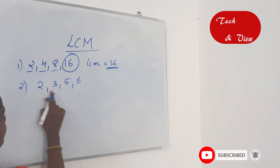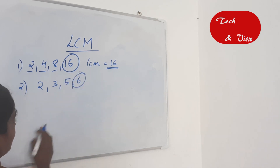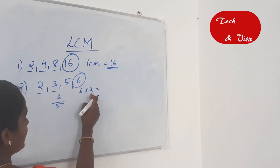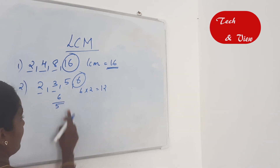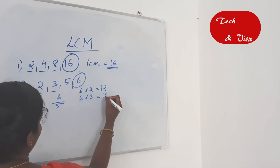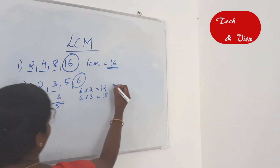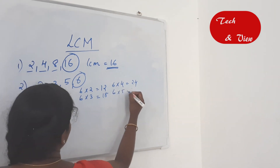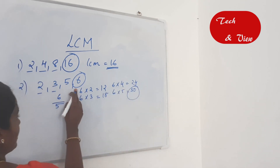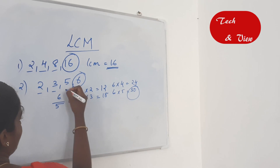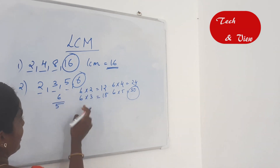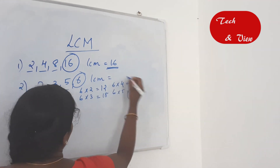Next: numbers 2, 3, 5, 6. The largest number is 6. 6 divided by 2 is 3 — fully divisible. 6 divided by 3 is 2 — fully divisible. But 6 is not divisible by 5. So we try multiples: 6 times 2 is 12, 6 times 3 is 18, 6 times 4 is 24, 6 times 5 is 30. 30 divided by 5 is 6 — fully divisible. So LCM of 2, 3, 5, 6 is 30.